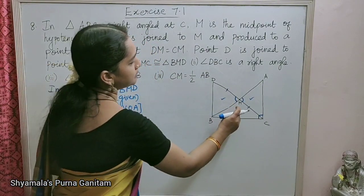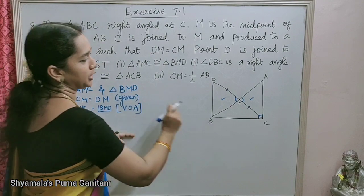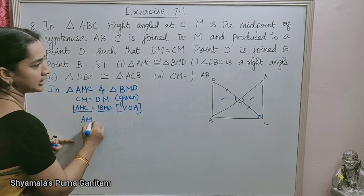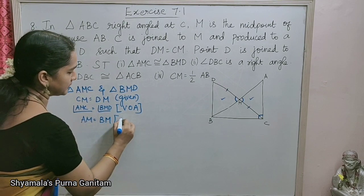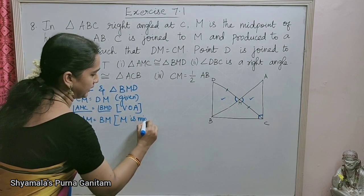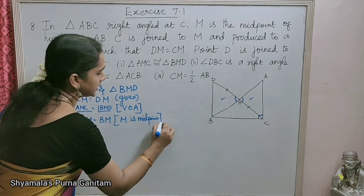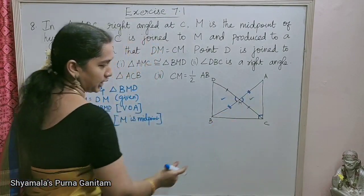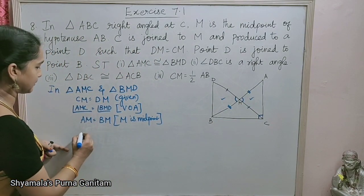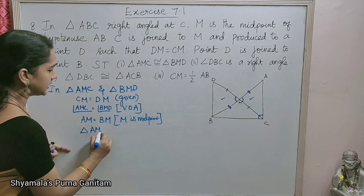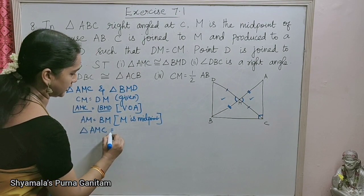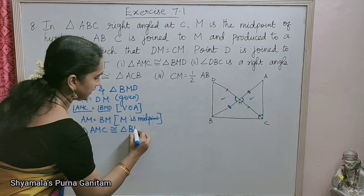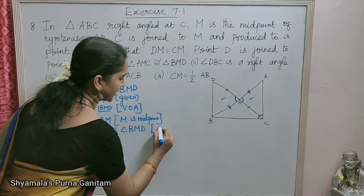M is the midpoint of hypotenuse AB, so AM is equal to BM. We now have two sides — CM equal to DM, AM equal to BM — and the included angle AMC equal to BMD. By SAS congruence, triangle AMC is congruent to triangle BMD.